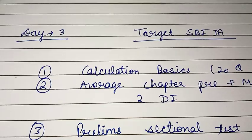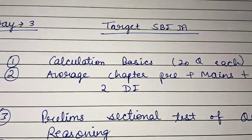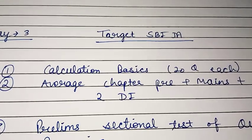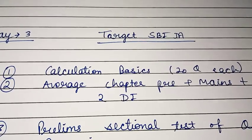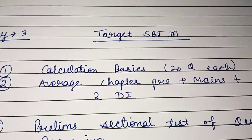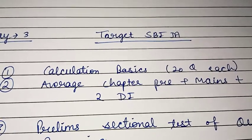First of all, there is calculation basics as you all know—20 questions each: approximation, simplification, number series. Then there is average chapter prelims plus mains, so you will take every chapter and practice from prelims to mains plus.